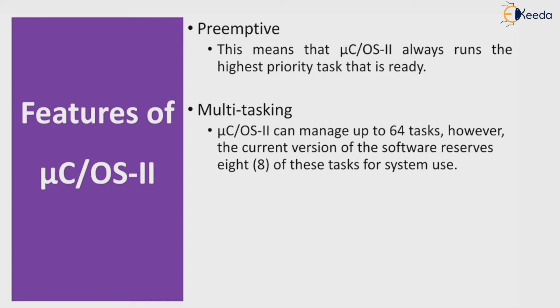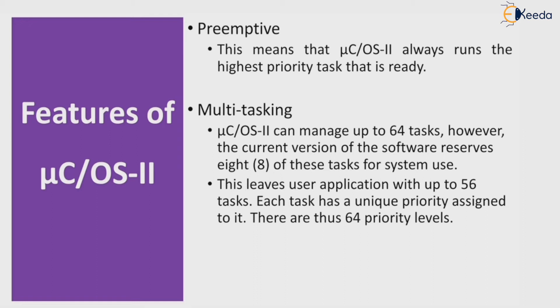It has the ability of multitasking and can manage up to 64 tasks. However, the current version of the software reserves 8 of these tasks for system use only, leaving the user application with up to 56 tasks. Each task has a unique priority assigned to it, giving 64 priority levels in total.